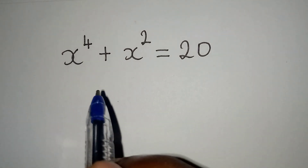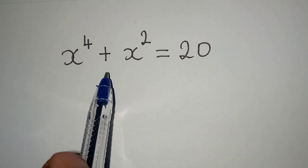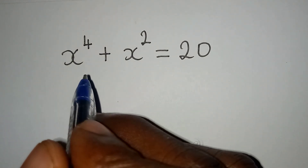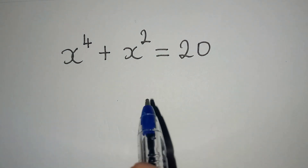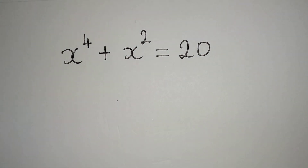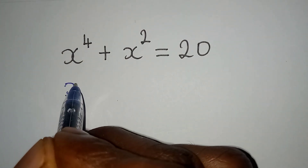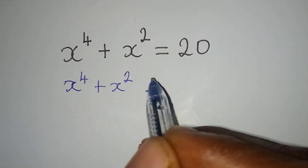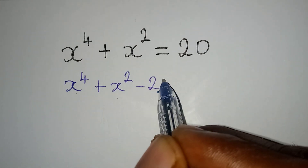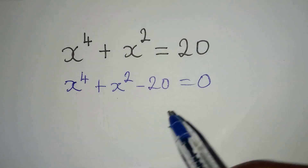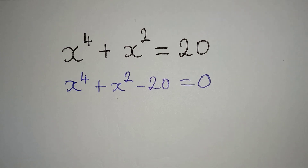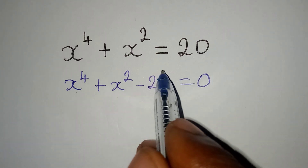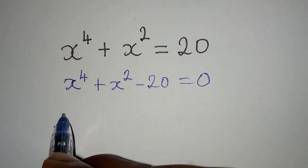Hello everyone, let's solve this problem very quickly. The first thing we'll do is bring all the terms to the left, so we have x to the power 4 plus x squared minus 20 equal to 0.